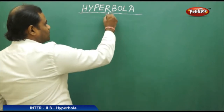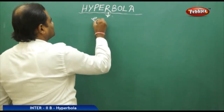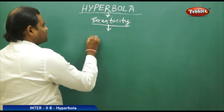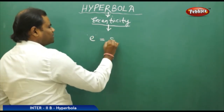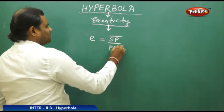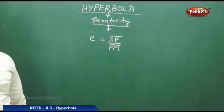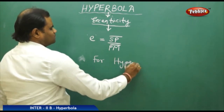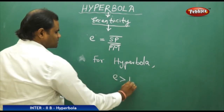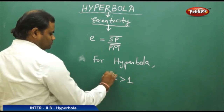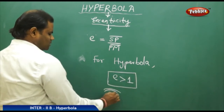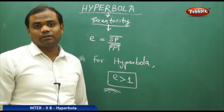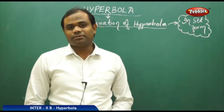Now let's see the eccentricity conditions of hyperbola. The eccentricity is generally denoted by E, which is the ratio SP by PM. For hyperbola, the condition is that E is greater than 1. So E greater than 1 defines the eccentricity of the hyperbola.